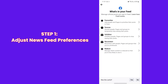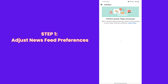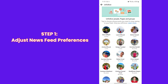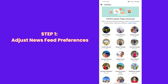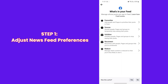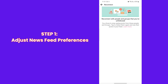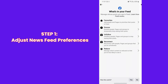Unfollow: From here you can unfollow a person, page, or group. This allows you to completely hide posts from people or pages you no longer want to see in your feed. Reconnect: If you previously unfollowed someone, you can easily reconnect and start seeing their posts again. Reconnect to follow a person, page, or group that you unfollowed in the past.